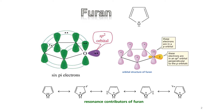Furan is a five-membered heterocyclic compound where the heteroatom is oxygen. One of the lone pair electrons on oxygen in furan is present in the P orbital. Like pyrrole, furan is an aromatic compound because it fulfills the criteria for aromaticity, which we discussed in my previous lecture video.